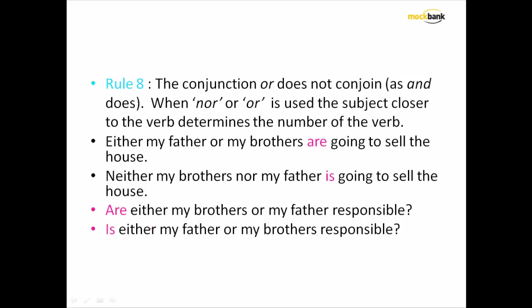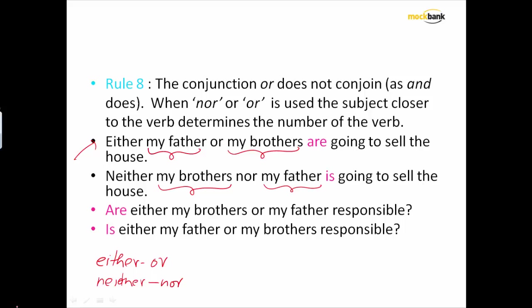Now this is something that always confuses. Before going to read the rule, let me read this problem. It says: 'Either my father or my brothers are going to sell the house.' There are two things being connected with 'either/or' — my father and my brothers. The same applies to 'neither/nor.' Now let us read the rule.